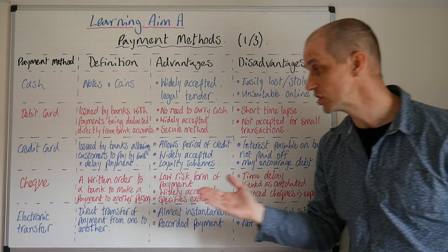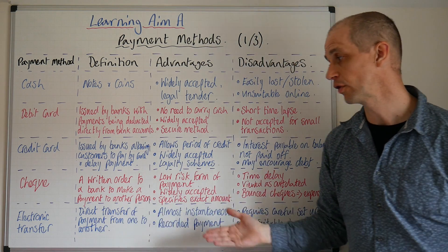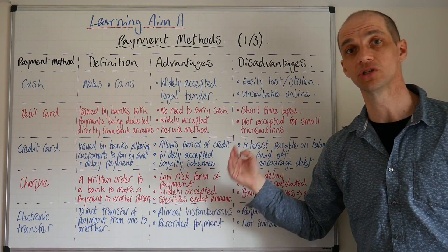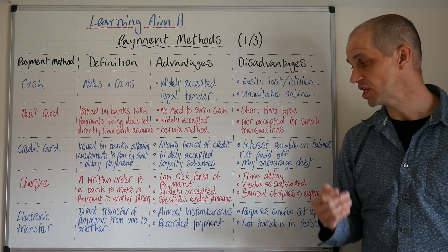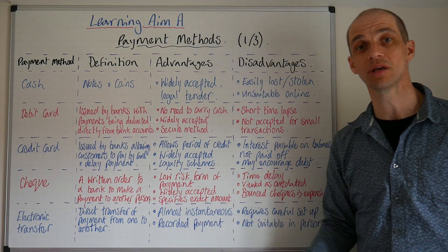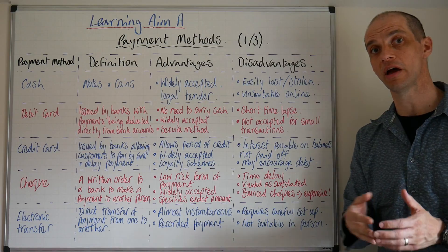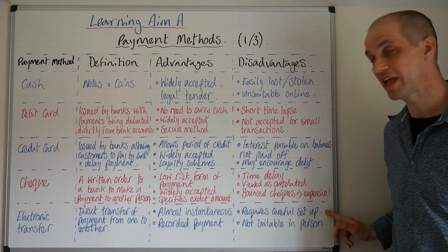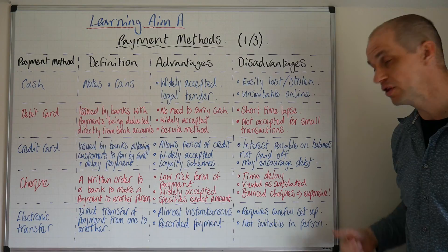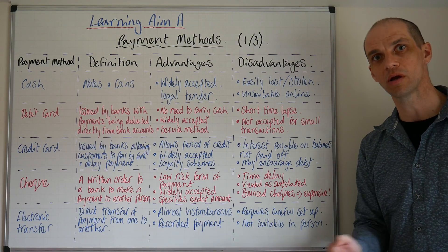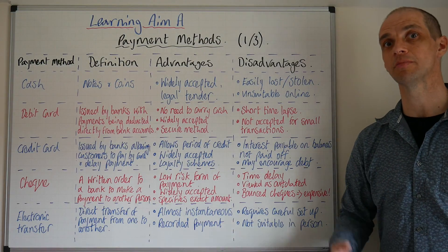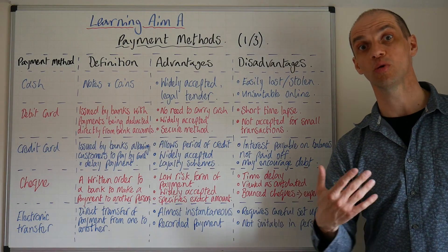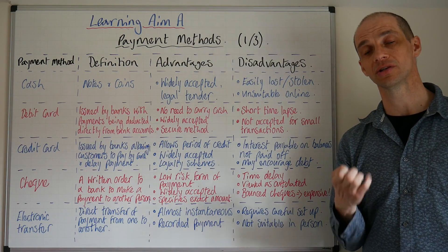The final payment method for this session is electronic transfer. This is a very convenient, almost instantaneous direct transfer of payment from one person to another, and it's a recorded format — meaning we have an electronic record of where that payment has gone and when it was made. However, it does require careful setup and there is room for error: incorrect digits could mean the payment doesn't go through, or worse, goes into someone else's bank account. It's also not suitable when you're face to face with someone.